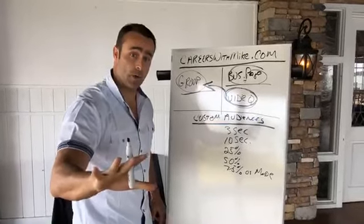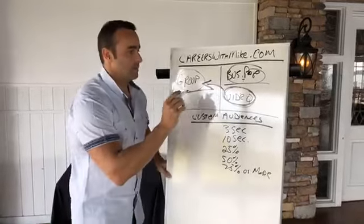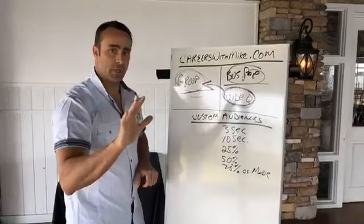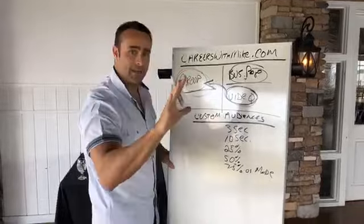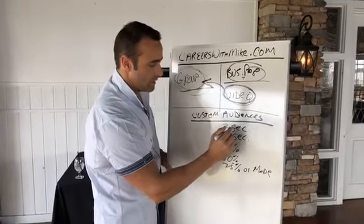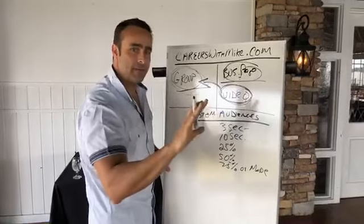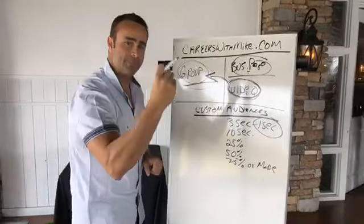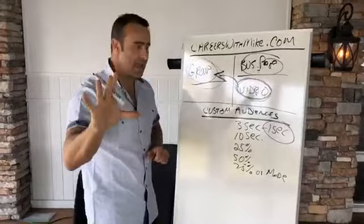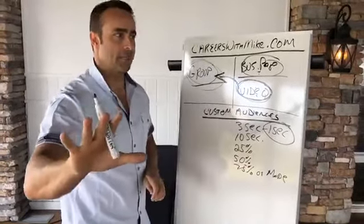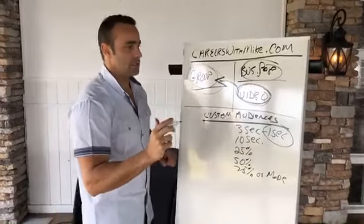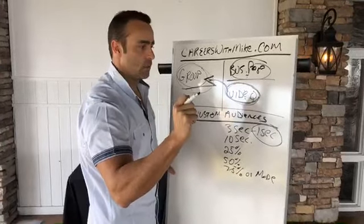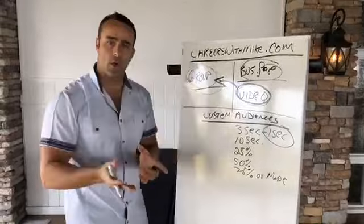With video, custom audiences lets you build an audience of everyone who watched three seconds, ten seconds, 25%, 50%, or more of your video. So you can siphon off the people in that private group who watched your shared video. Now I'm going to show you how to put this on steroids. What if we could build a custom audience from everybody who watched just one second of the video?